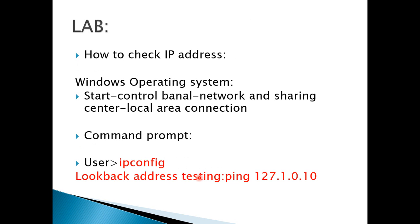Now we will check how to find the IP address in a Windows operating system. Go to the start menu, then control panel, and select network and sharing center. Click on local area connection, then click details to check your IP address. You can also check the IP address through the command prompt using the command 'ipconfig'. To test the loopback address, type 'ping 127.0.0.1' or any 127.x loopback address in the command prompt.